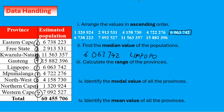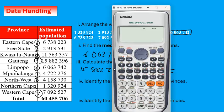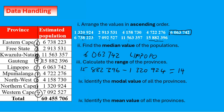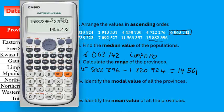Calculate the range of the provinces. Range is easy — we take the biggest number and minus the smallest number. That gives us 15 million, 882, 396. Working that out on the calculator, the range is 14 million, 561 thousand, 472.